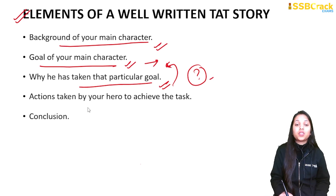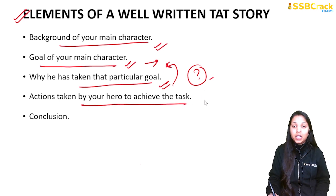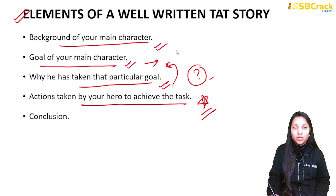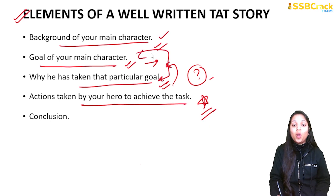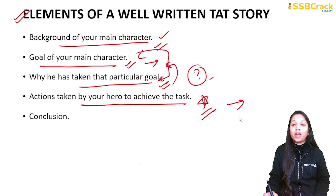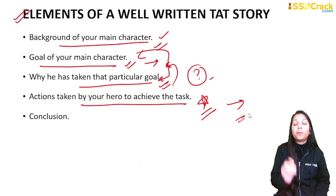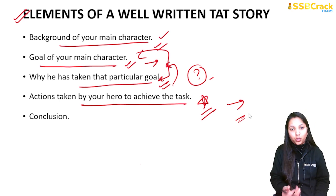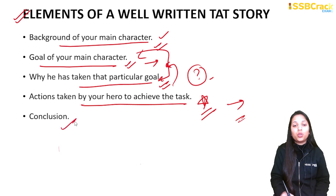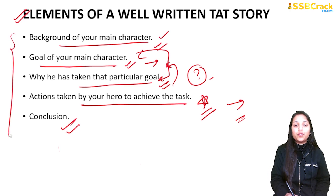Then cover the actions taken by your hero to achieve the goal — these actions are very importantly covered. Use about one line for background, one line for the goal and reason, then three to four lines or more for the actions your main character takes to achieve the goal, and finally one or two lines for the conclusion. I hope the structure of the story is very clear.